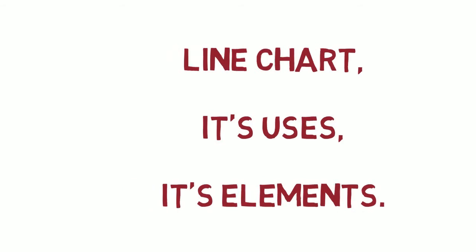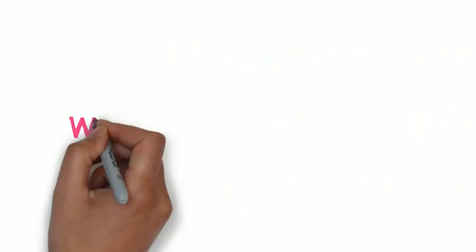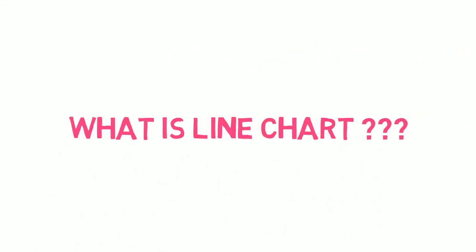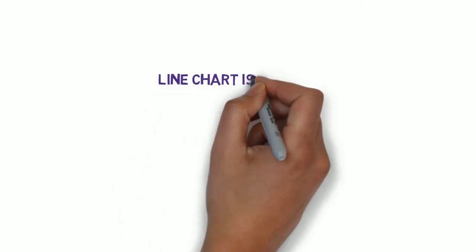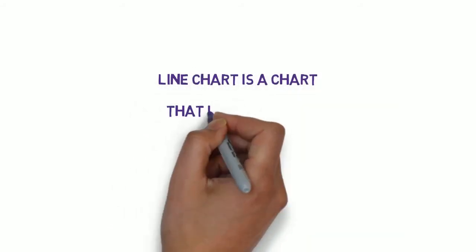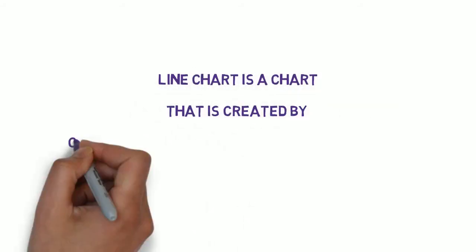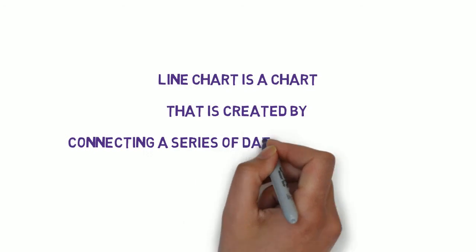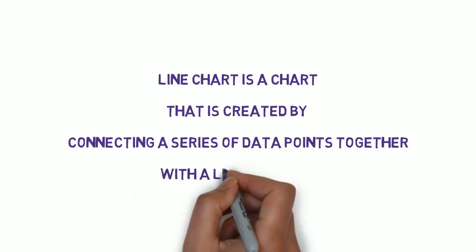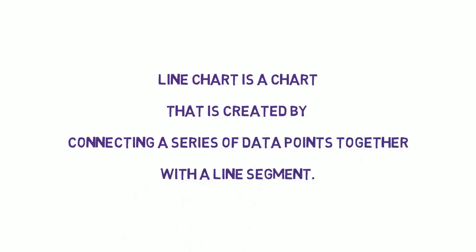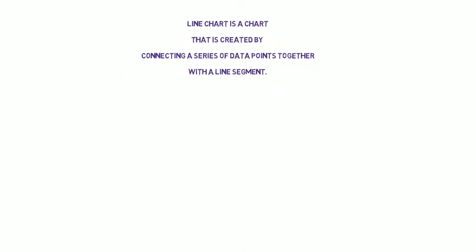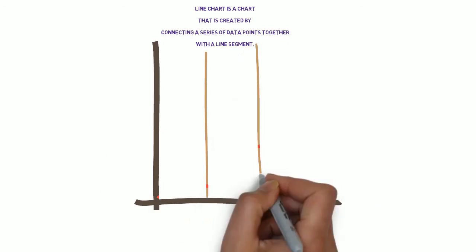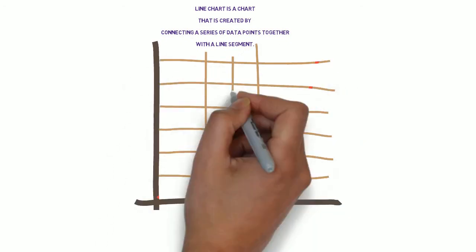The first and foremost question is, what is a line chart? A line chart is a chart that is created by connecting a series of data points together with a line segment. This is a simple meaning of a line chart.